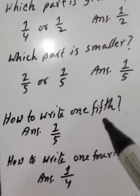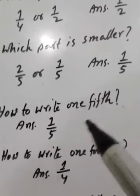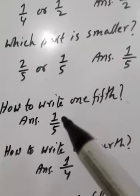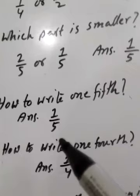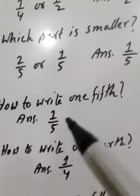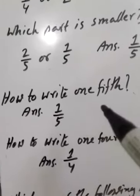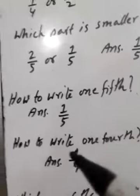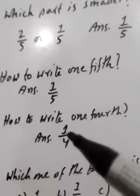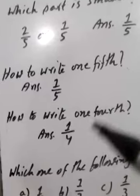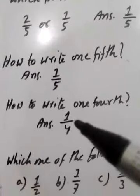How to write 1 by 5? 1 by 5 is written as 1/5. 1 upon 5 is one fifth. And 1 upon 4 is one fourth.